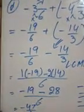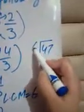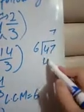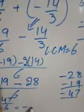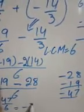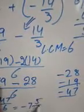It's minus 47/6, which is an improper fraction, so change it into a mixed number. 47 divided by 6: 6 × 7 = 42, subtract to get 5. So the answer is minus 7 and 5/6.